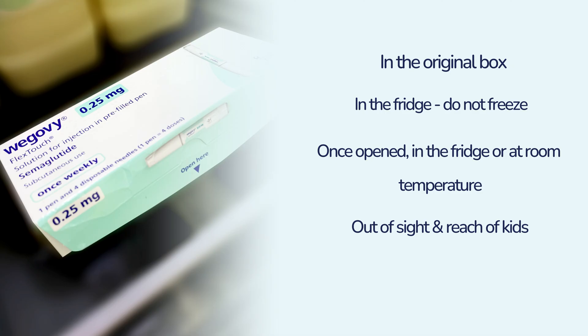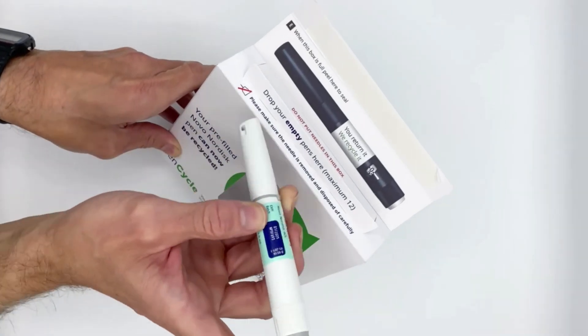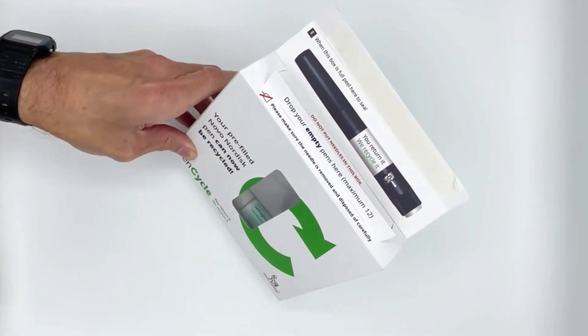Keep the pen and needles out of sight and out of reach of children. Handle the pen with care. Do not expose your pen to dust, dirt, or chemicals. Any damage can lead to inaccurate dosing. Once your pen is empty, you can pop it in a pen cycle box for recycling.